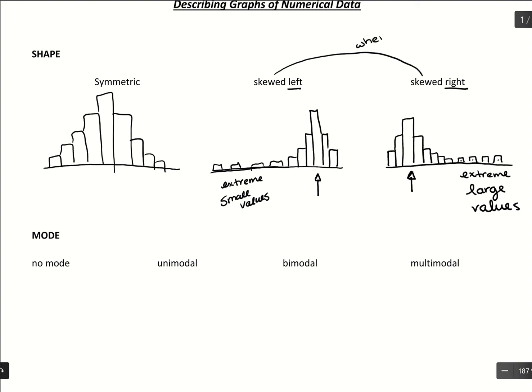Whenever we're asking about skew, think about where is the tail? Where is the tail for the data? Because it's where the tail is that the important information is. We're getting these extreme small values or extreme large values that are skewing our results.